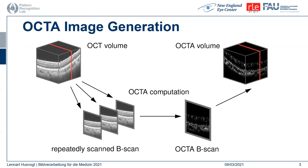In order to compute OCTA volumes, regular OCT volumes are scanned with the same B-scan — the red line or red slice — scanned multiple times in quick succession. Aside from noise, any kind of motion can cause changes in the OCT data over time. Blood flow down to the capillary level is sufficient to cause these changes in OCT. Established methods then compute OCTA from OCT using, for instance, amplitude decorrelation or speckle variance.